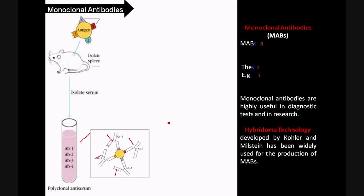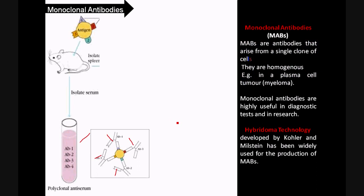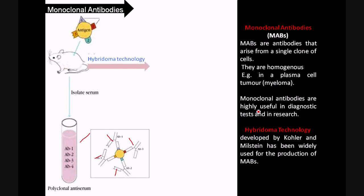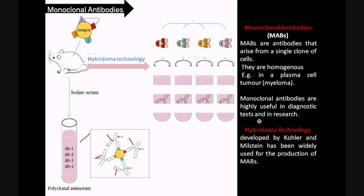Now, what are monoclonal antibodies? Monoclonal antibodies are antibodies that arise from a single clone of cells. They are homogeneous, consisting of antibodies with a single specificity that arise from a single clone of plasma cells. We need a special technology to develop monoclonal antibodies, and that is hybridoma technology, developed by Köhler and Milstein, which has been widely used for the production of monoclonal antibodies. These monoclonal antibodies are highly useful in diagnostic tests and in research.